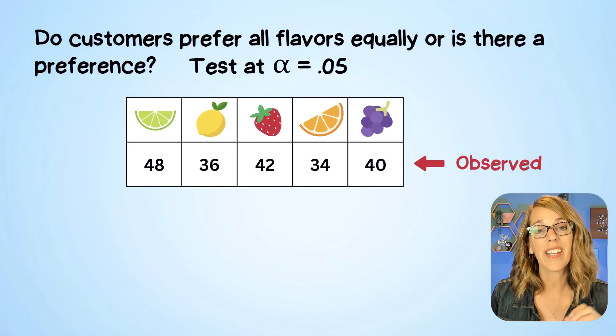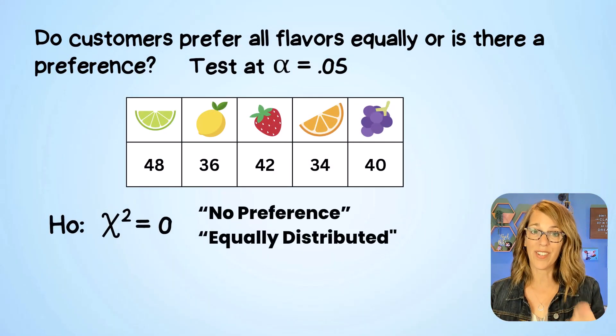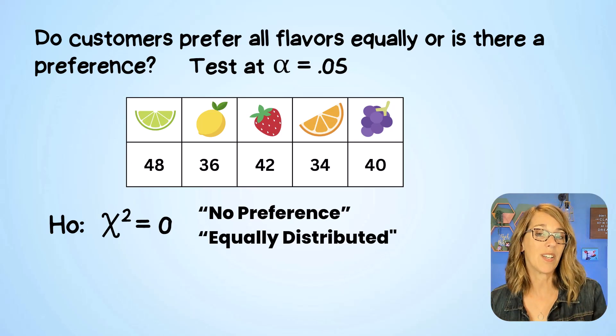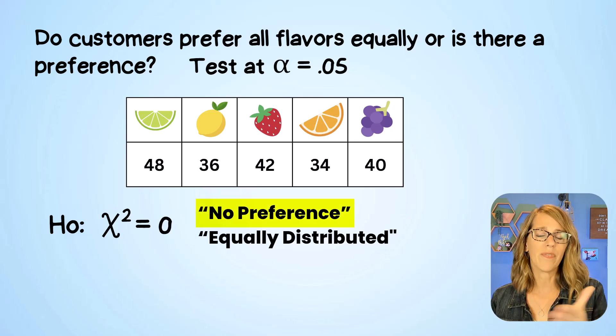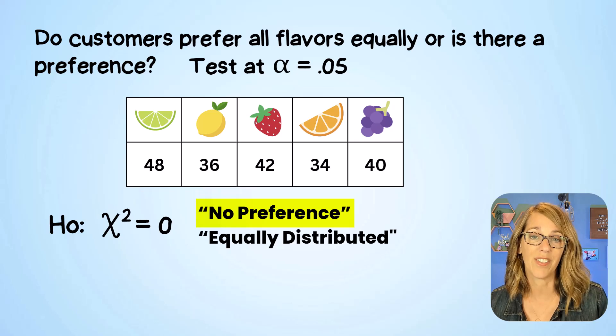Continuing with our test, we want to set up our hypotheses starting with this null hypothesis. The null hypothesis says that chi-square is equal to zero, meaning that there is no preference shown, that the flavors here are equally distributed.